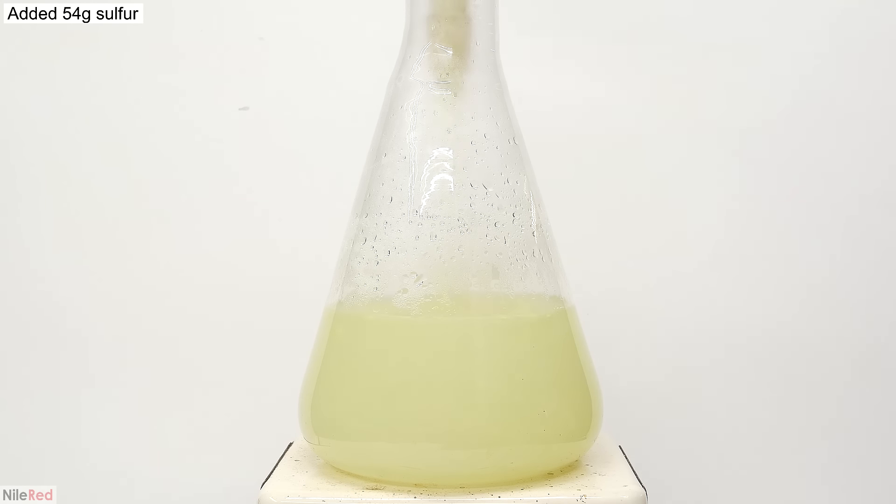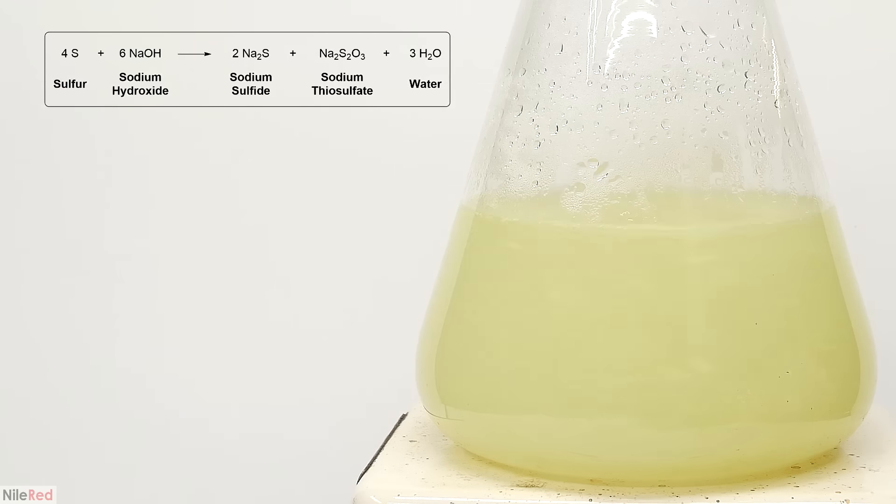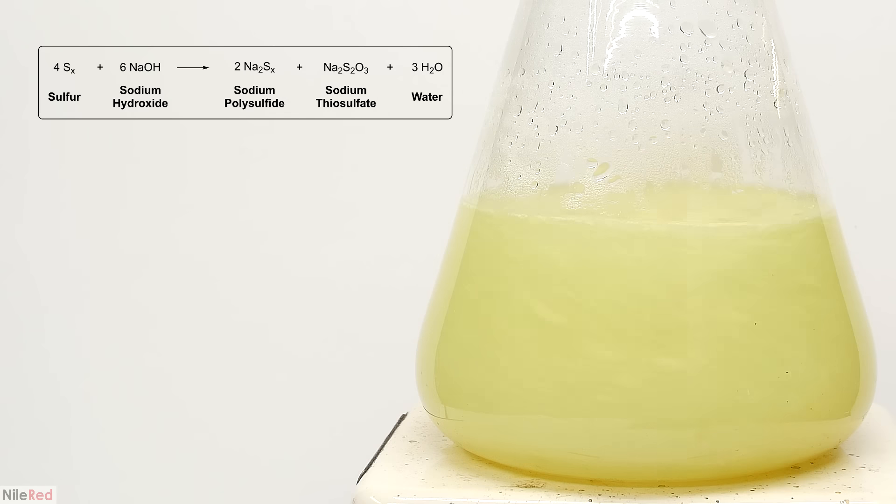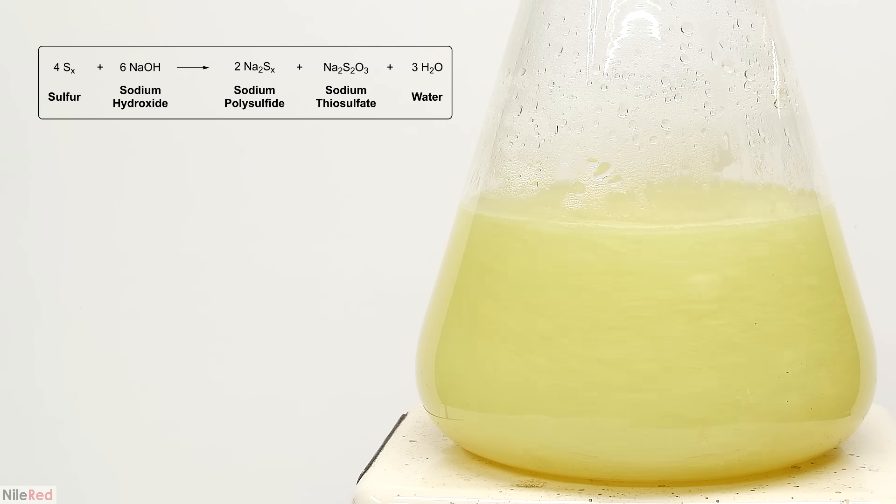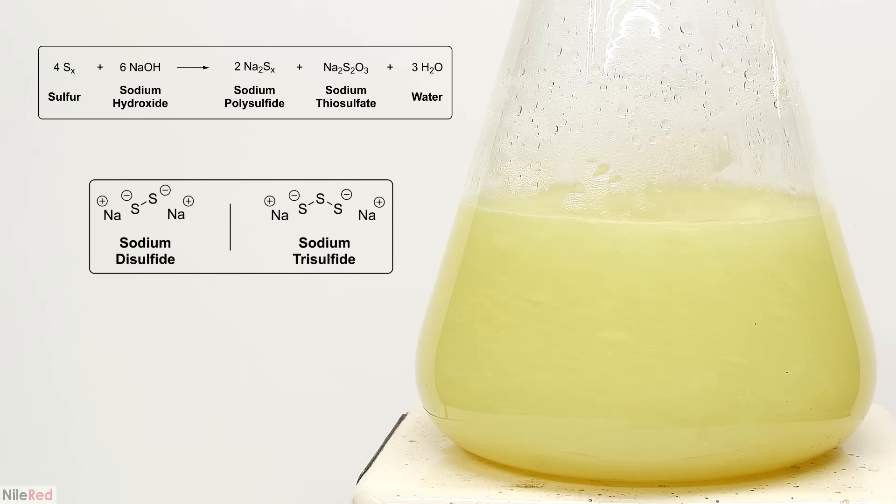Now it's time to make the polysulfide solution, so I start adding the sulfur. With excess sodium hydroxide, the sulfur reacts to produce mostly sodium sulfide, but it will also make some polysulfides. The polysulfides have the general formula Na2SX, where it can have anywhere from two to five sulfur groups. However, because I have such a large excess of sodium hydroxide, I imagine the polysulfides that do form are the shorter ones, with at most around two or three sulfurs.